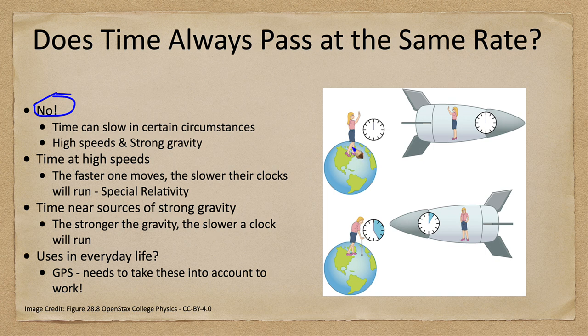What you would expect would happen is that because this one is moving very quickly, her clocks will run slower. So when she goes and comes back, she will be much younger than her sister that was left on Earth. Very little time would have passed for her traveling at a very high speed.